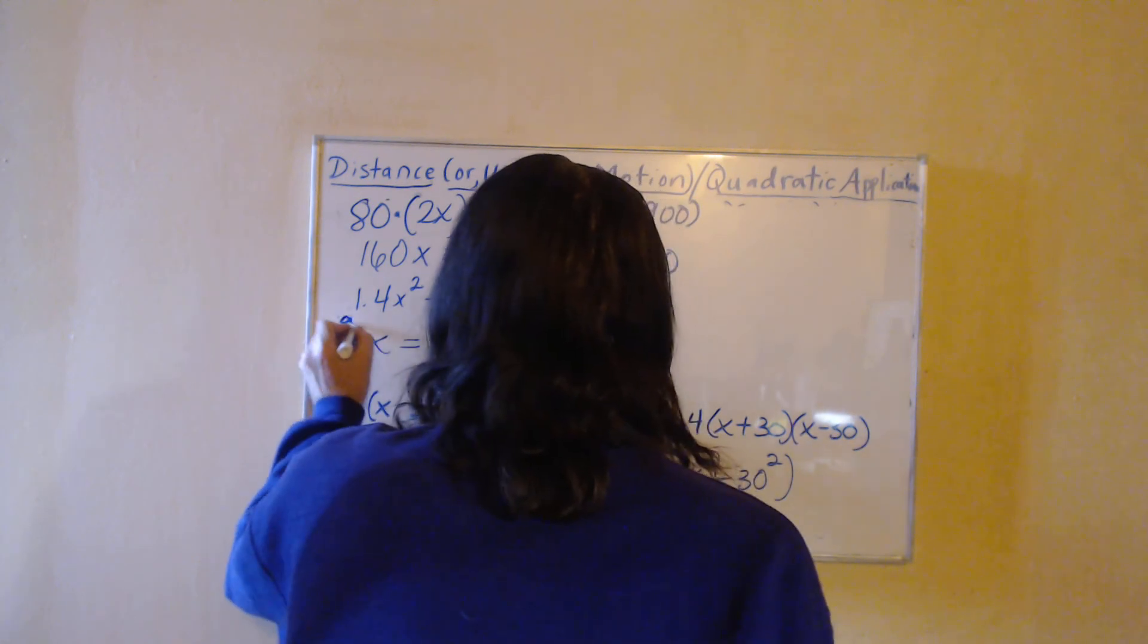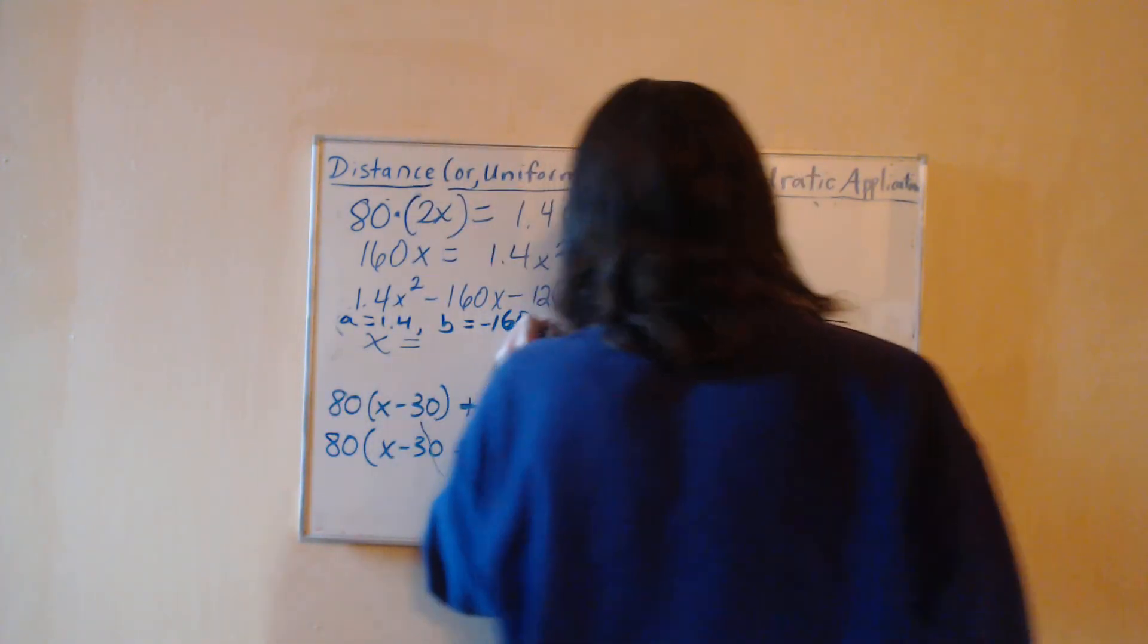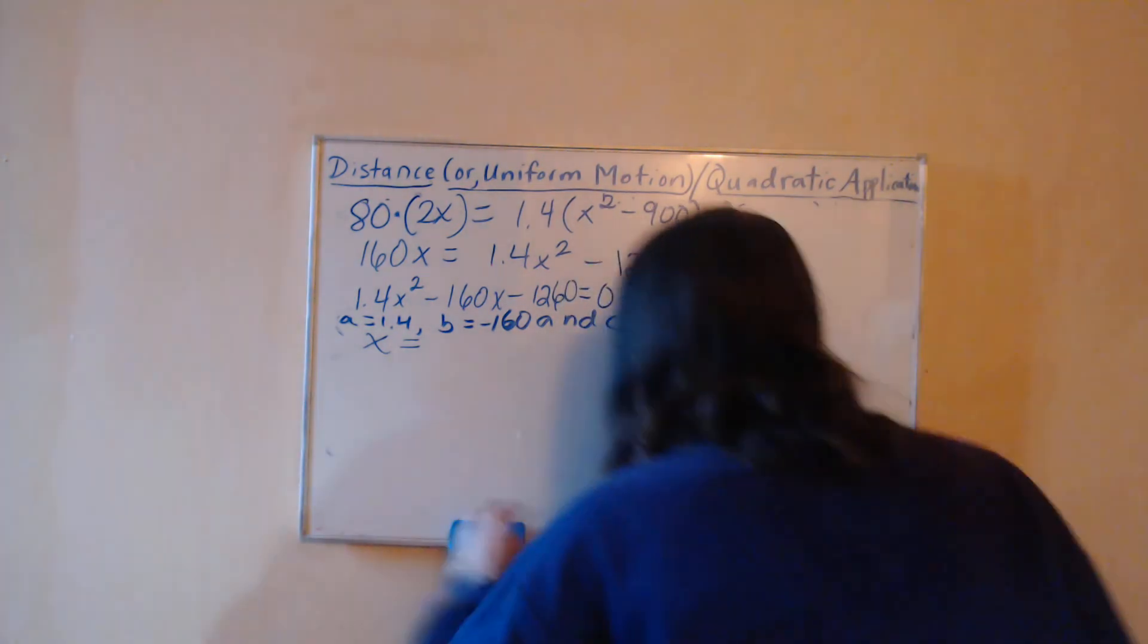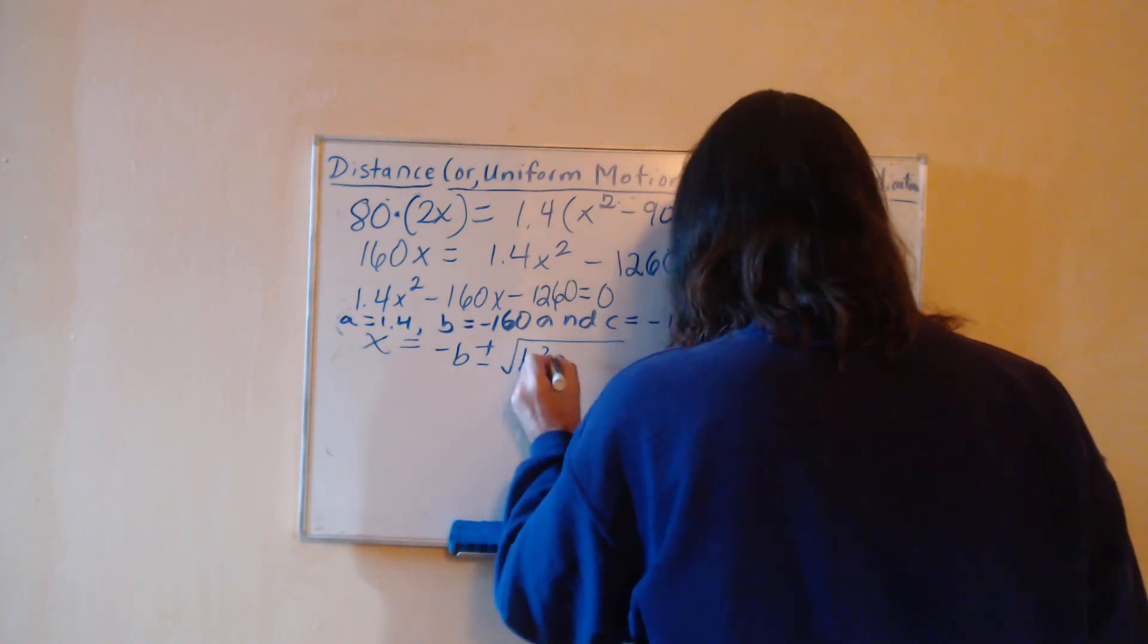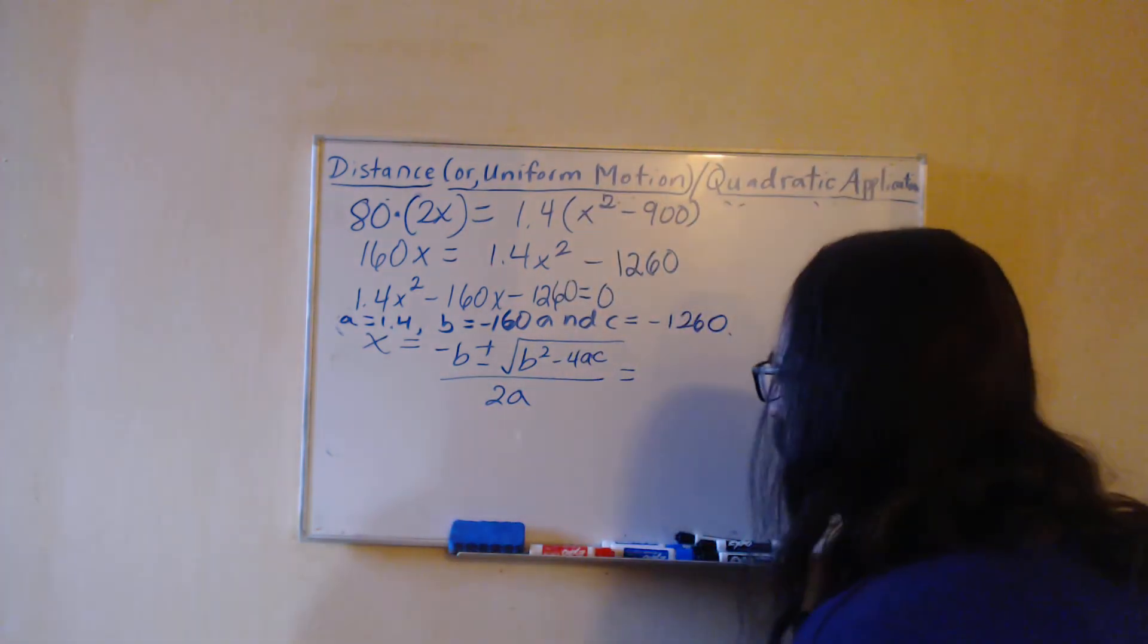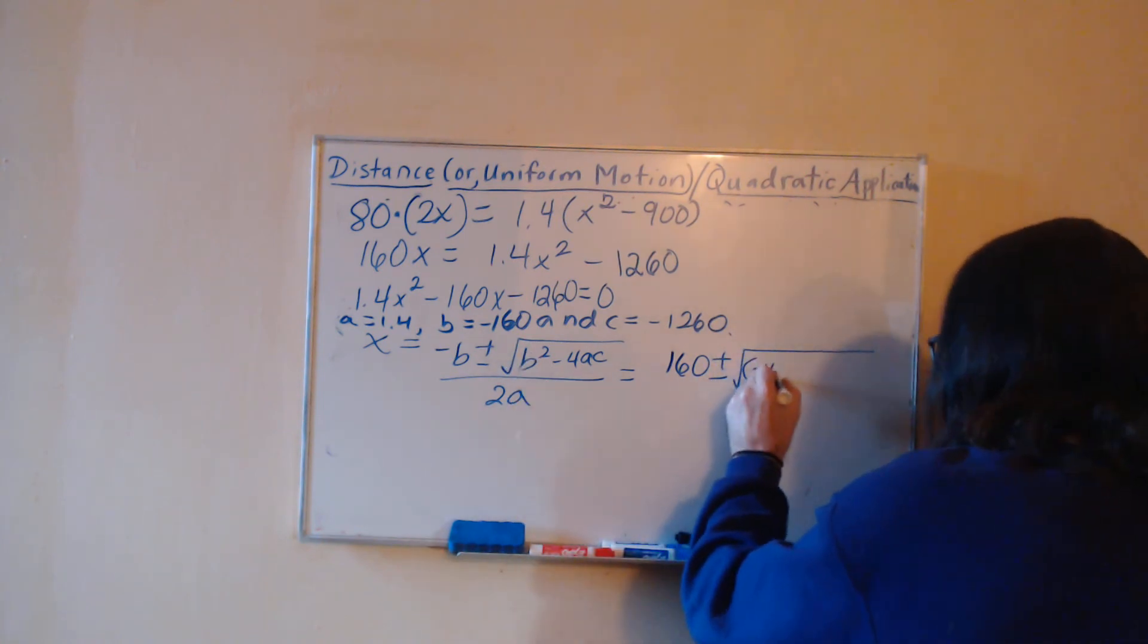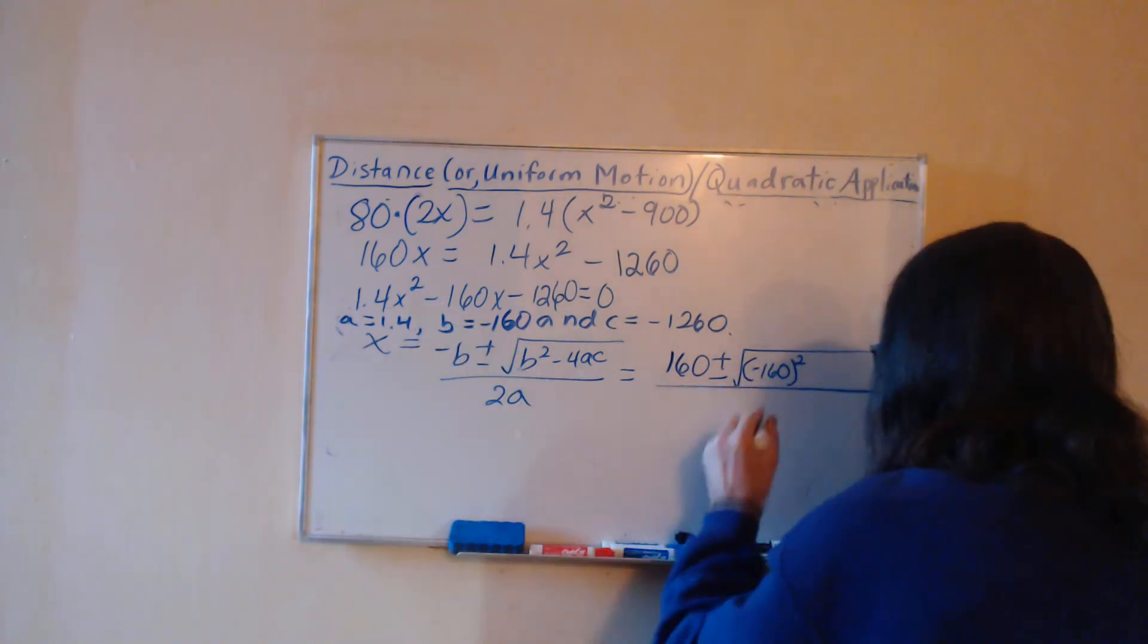I'm going with a quadratic formula. a is 1.4, b is negative 160, and c is negative 1260. So plugging those into the formula, with b being negative 160, negative b is going to be positive 160. I'm still plugging in a negative 160 here but after we square it it's going to be positive negative anyway. 2 times 1.4, that's 2.8.